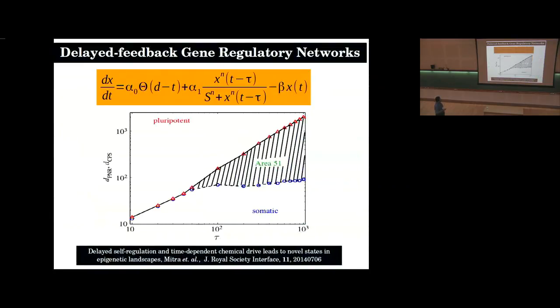We constructed the phase diagram of this one-dimensional model. For different parameter regimes, you can either have a direct transition from the undifferentiated to the pluripotent state, or go through the oscillatory region, which is the area 51 state.